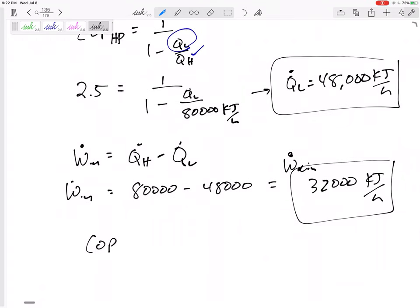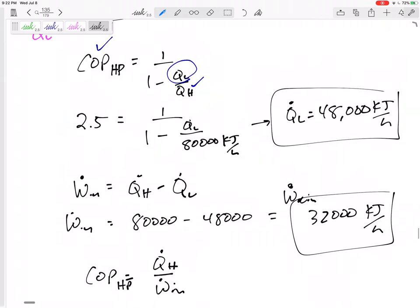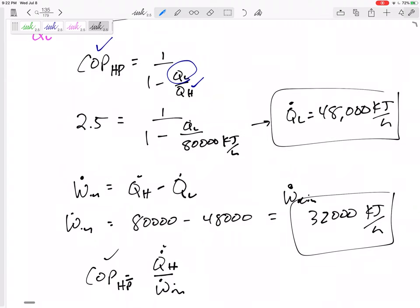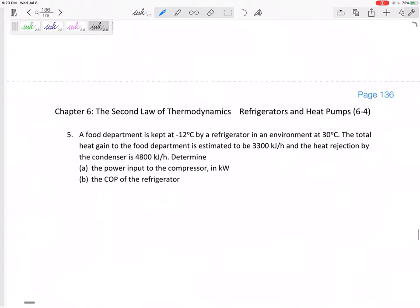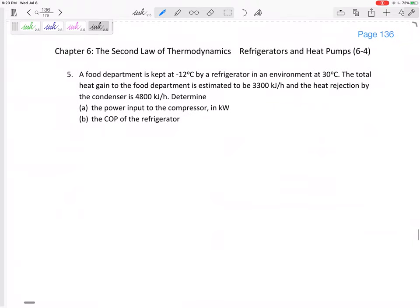So there we go. I probably could have done COP is Q_H over W_in. I might should have started with that one. If I know COP, I know Q_H. That's probably the way I should have done that. But you can see, we can take different routes to get there. Let's do one more quick one.